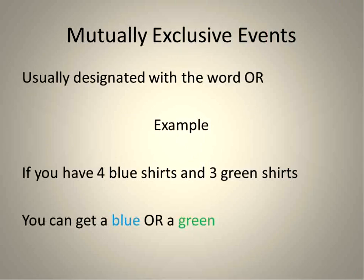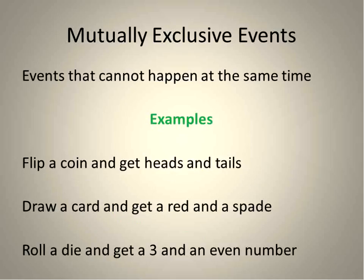So let's talk now, now that we have some basic background, let's talk about mutually exclusive events. Mutually exclusive events are usually designated with the word OR. For an example, if you have four blue shirts and three green shirts, you can get blue or green. So there are two events you can't do at the same time. You can't reach into your drawer and pull out both a blue and a green shirt. You would get one or the other. There are events that cannot happen at the same time.